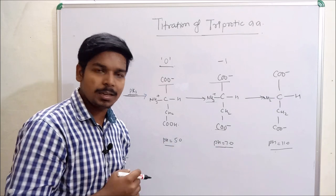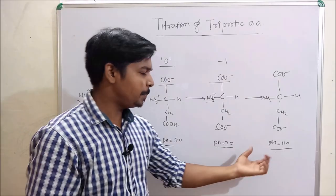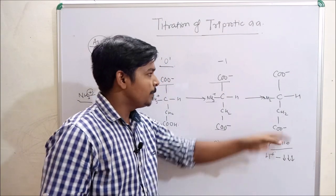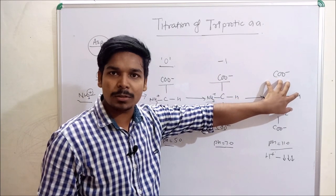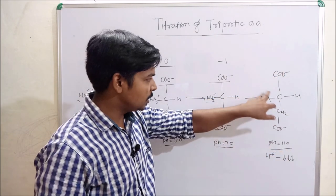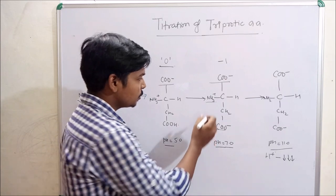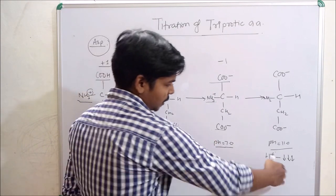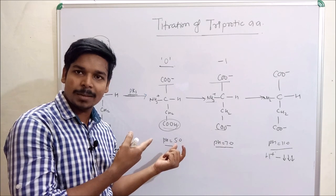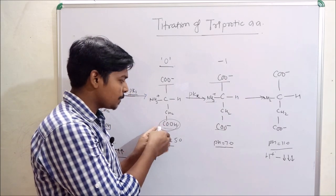When we increase the pH from 7 to pH 11, there is no more proton available to the primary carboxylic group and no more proton available to the secondary carboxylic group. Only the amino group has a proton left to donate further. So at this stage, the side carboxylic group has already donated its proton, and the amino group will donate next. The dissociation constant when the side group donates the proton is known as pKr.